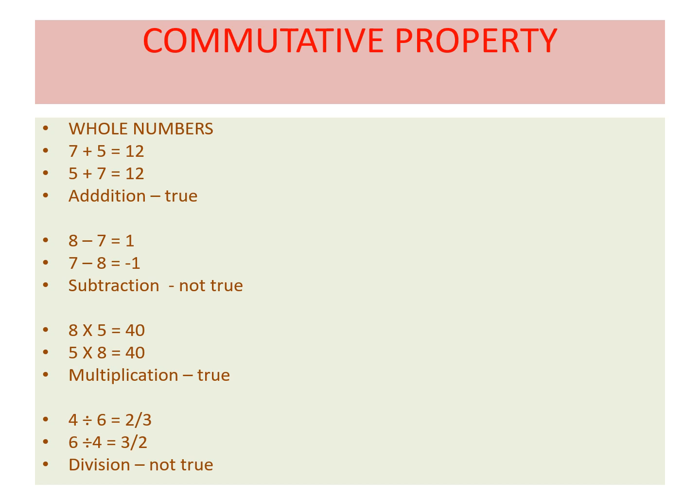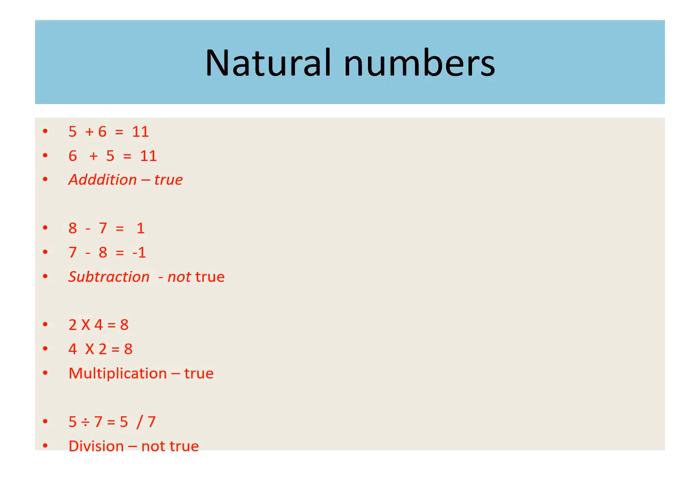For natural numbers, the same results hold as for whole numbers. Natural numbers are commutative under addition and multiplication, and are not commutative for subtraction and division.